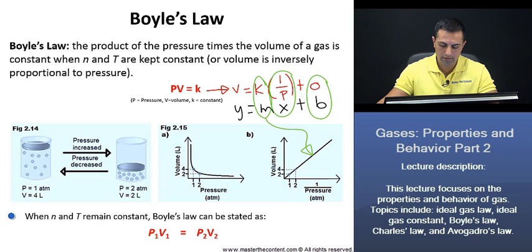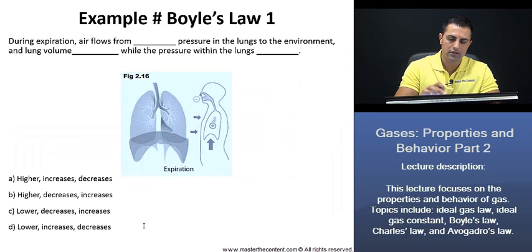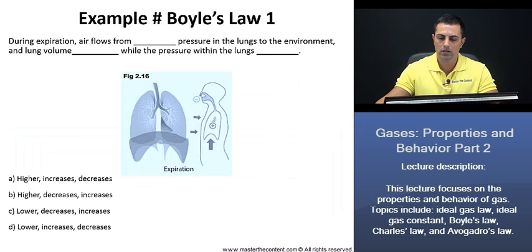Looking here at our last point, when the quantity of gas and temperature remain constant, Boyle's Law can be stated as follows: P1V1 = P2V2. And this equation is very helpful when you're working with various types of problems related to Boyle's Law. Great. Let's move on now to our next slide here. If we take a look here, example Boyle's Law 1.